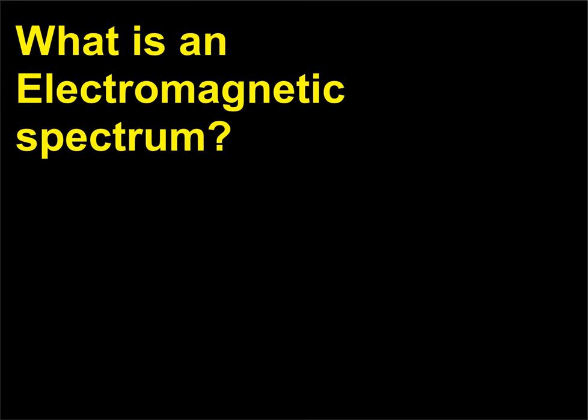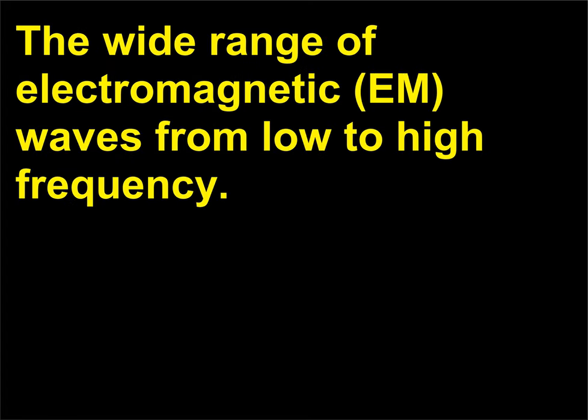What is an electromagnetic spectrum? The electromagnetic spectrum is the wide range of electromagnetic waves from low to high frequency.